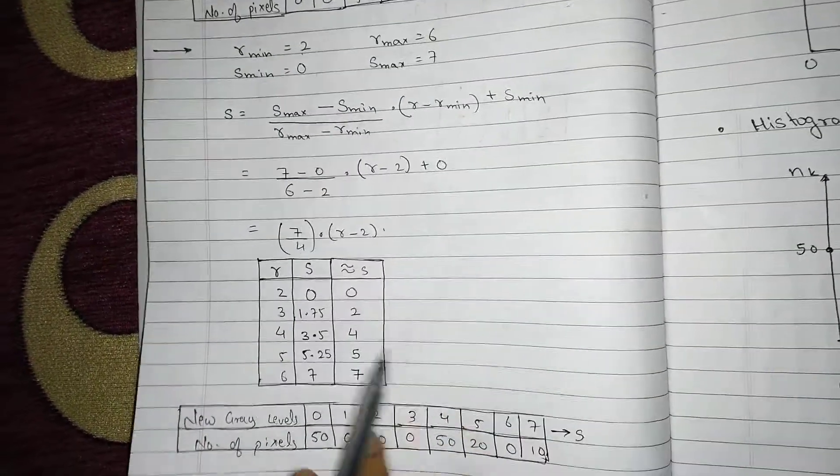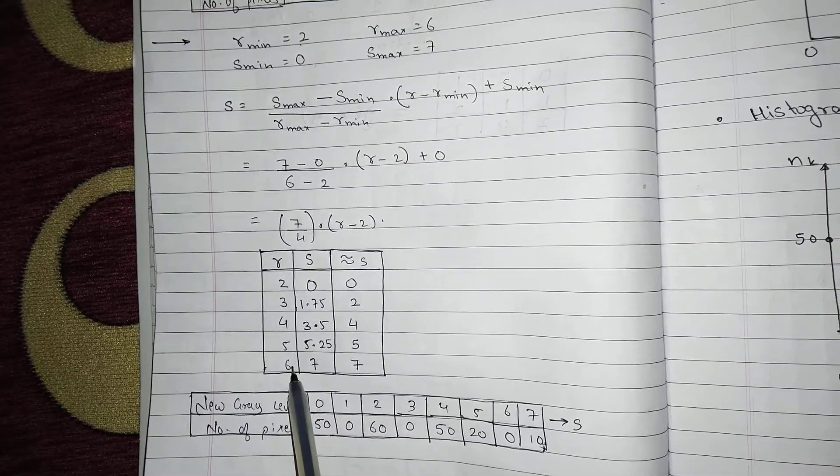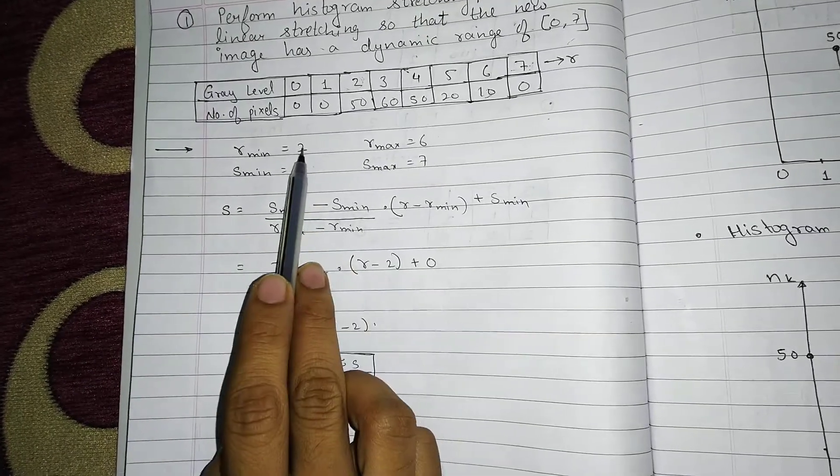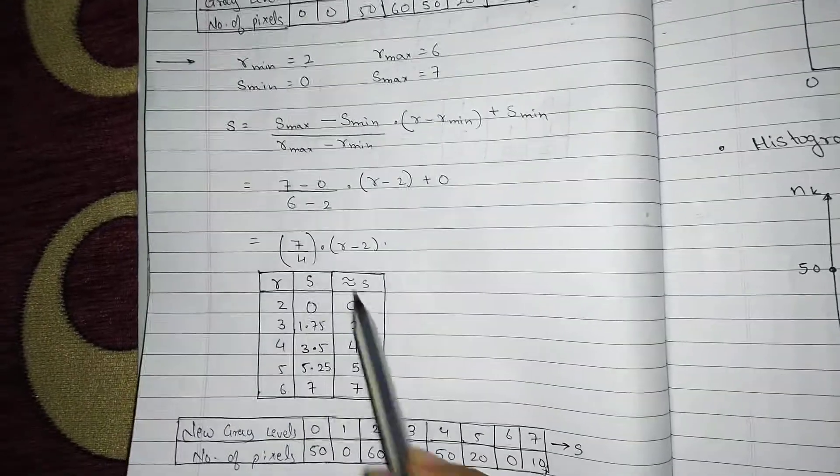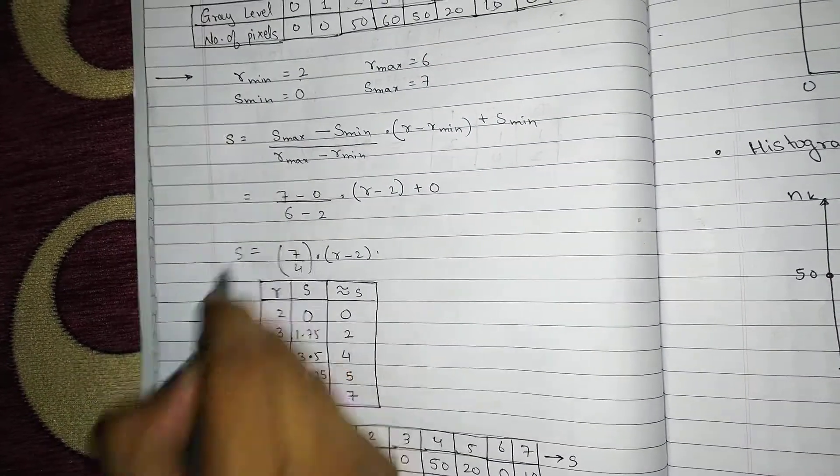From these solving that we get 7 by 4 into R minus 2. So let's substitute the values. We have R 2, 3, 4, 5, 6. Why 2, 3, 4, 5, 6? Because R min was 2, R max was 6. So it will be between 2 to 6 both inclusive. So 2 to 6 and let's substitute these values of R's in this S equation.